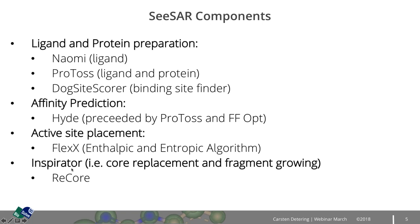Lastly, we have the Inspirator — a two-tiered way to explore new chemistries. One is core replacement, done by ReCore (ReplaceCore). The other is fragment growing, based on a manual placement docking approach where you utilize pharmacophores on the protein surface. That was a little dry, and I promise this will be the second driest slide; then we'll get back to the beautiful GUI.